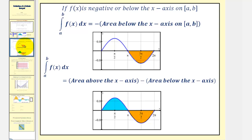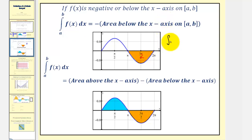Now if the function is negative, or below the x-axis on the closed interval, then the integral of f of x from a to b would be equal to the opposite of the area below the x-axis. So because of symmetry, this orange area is also two square units, but because it's below the x-axis, the integral of sine x from pi to two pi equals negative two.